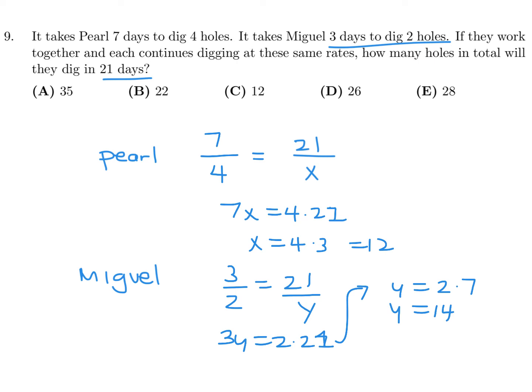So in 21 days, Pearl can dig 12 holes. And in 21 days, Miguel can dig 14. So they're saying together, how many can they dig? Well, 12 and 14 together. 12 plus 14 is 26. So together, they can dig 26 holes. So number 9, the answer is D.